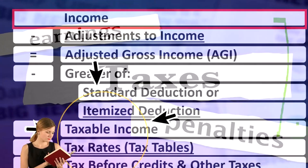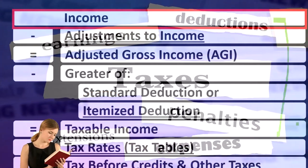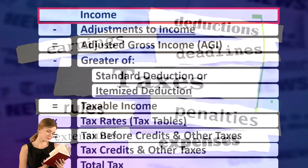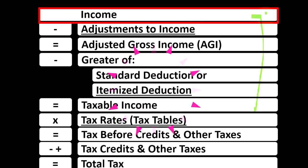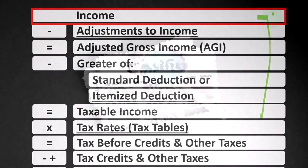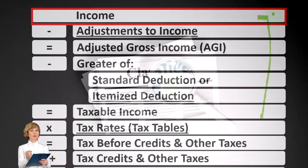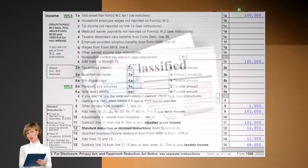Everything's flipped on its head. We want the taxable income as low as possible, as opposed to in normal circumstances net income, which we usually want as high as possible. That means with the income line, we need to determine if something is classified as income and whether or not it's exempt income with regards to recording it for taxes. That's the general concept.